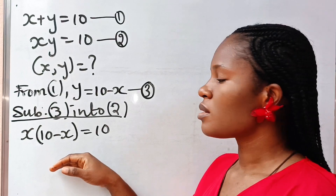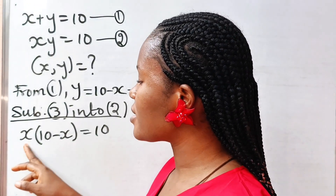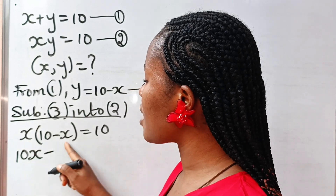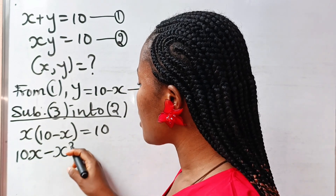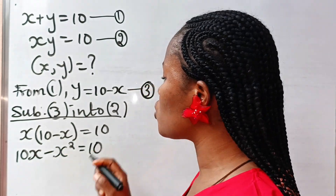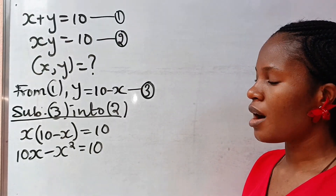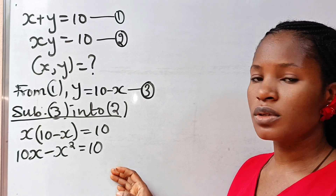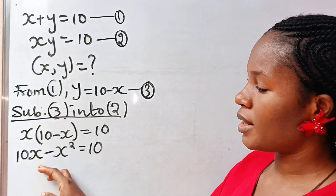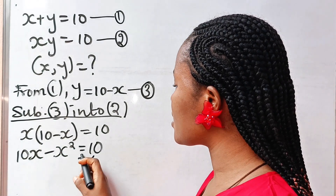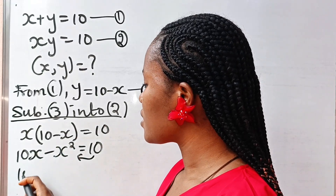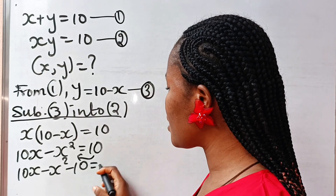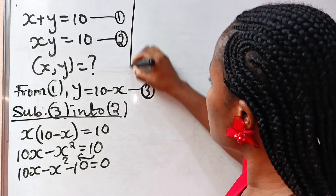Now let's open the brackets. We have x times 10, which gives us 10x, minus x times x, which is x squared, is equal to 10. If you look closely you will notice that we just formed a quadratic equation. So taking this in, we have 10x minus x squared minus 10 is equal to 0.